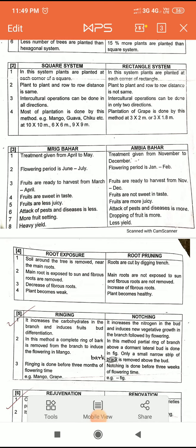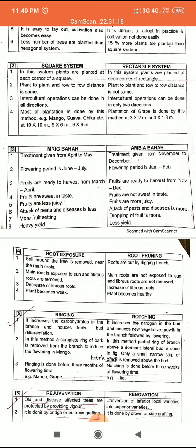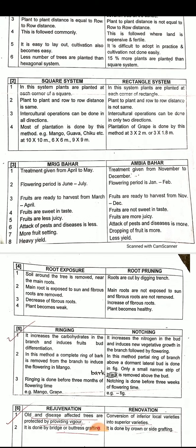In Mrig Bahar, stress begins from April to May — water is fully stopped. In Ambiya Bahar, stress is given from November to December, also by stopping water. In Mrig Bahar, the flowering period is June–July. In Ambiya Bahar, the flowering period is January–February.